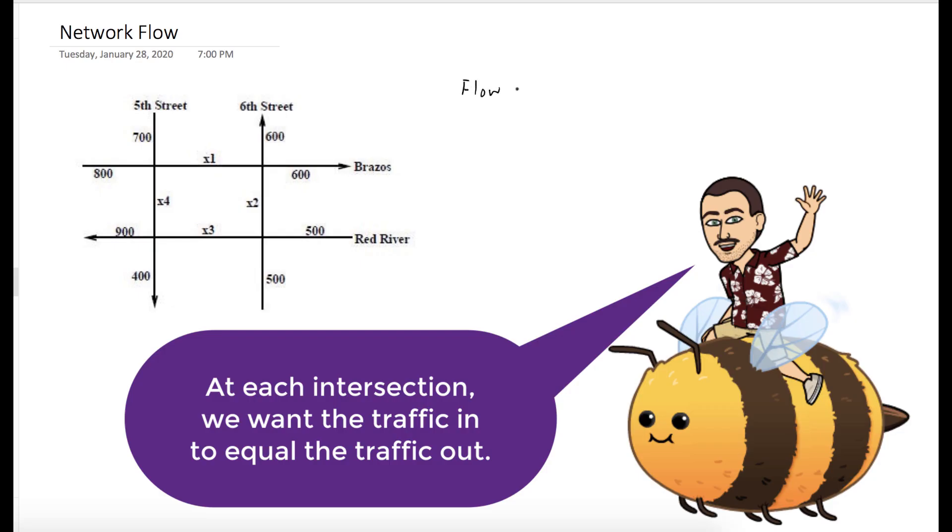So at each intersection, we want the flow in to equal the flow out. We'll start with this first intersection, and you can see that there's 700 plus 800 cars flowing in, and x1 plus x4 cars flowing out.